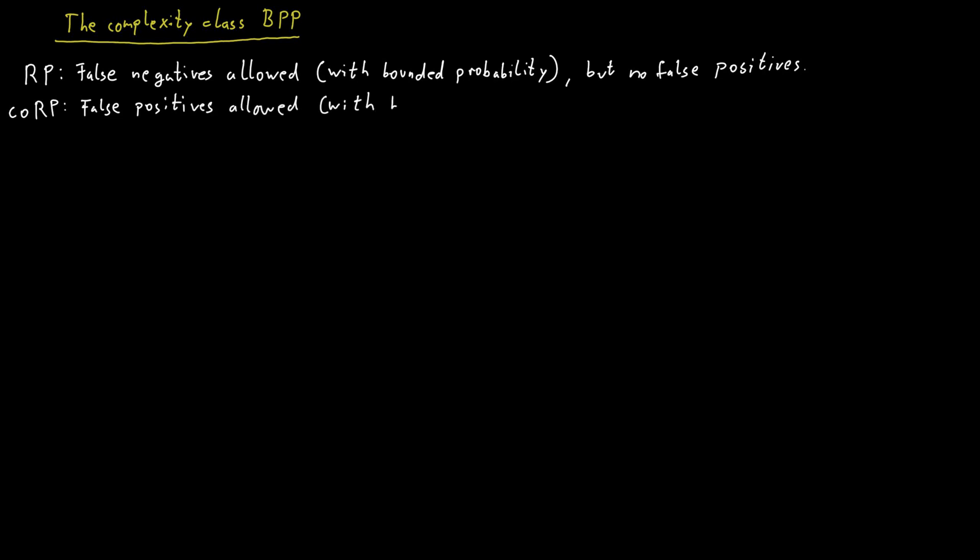For the complexity class CoRP, it is the other way around. This raises the question whether it's possible to have a complexity class where both types of errors are allowed, where we can have false positives and false negatives, but both with some bounded error probability.